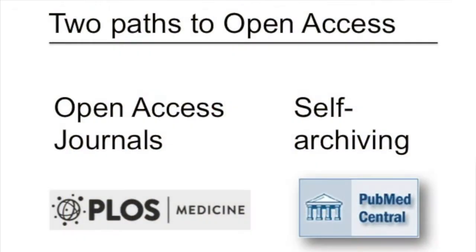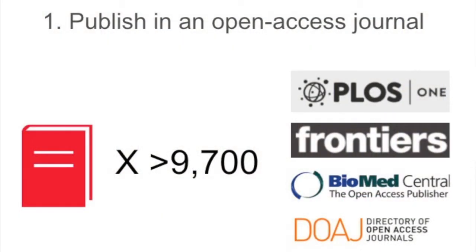There are two paths toward an open access system. One is to publish in an open access journal that makes all of its content openly available immediately upon publication. The second, a transitionary path, is what's called self-archiving — essentially publishing in subscription-based journals but then making a copy of your article freely available through an institutional repository or a subject-specific repository like PubMed.